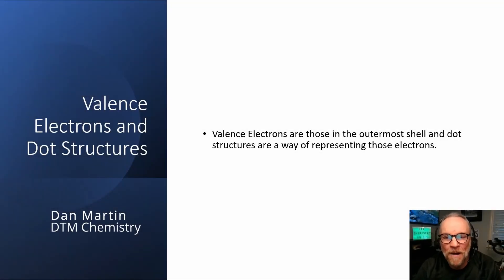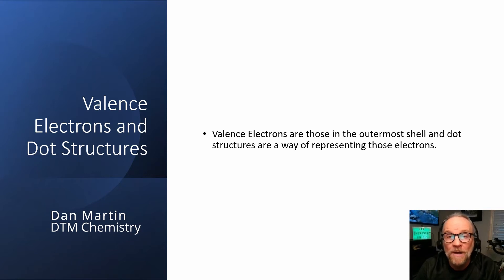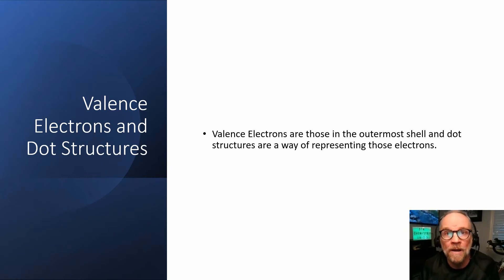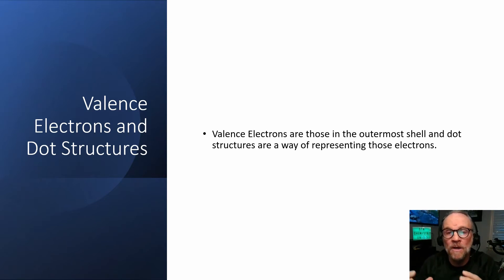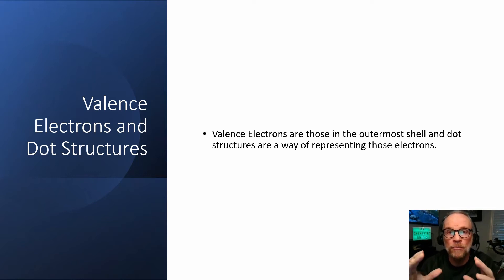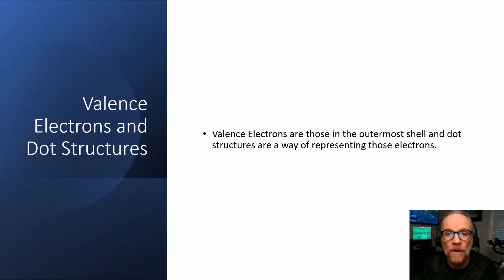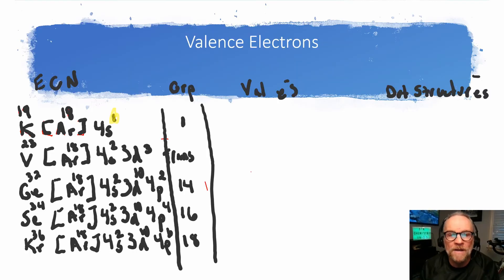Let's talk about valence electrons and dot structures. Valence electrons are those in the outermost shell, and they are super important because they drive chemical reactions. We use dot structures to denote the number of valence electrons for each atom. Later, when we talk about chemical reactions, we'll draw dot structures of metals and non-metals to see how they transfer those electrons.